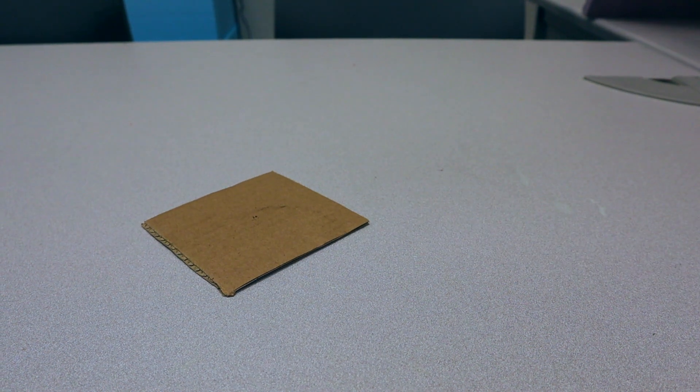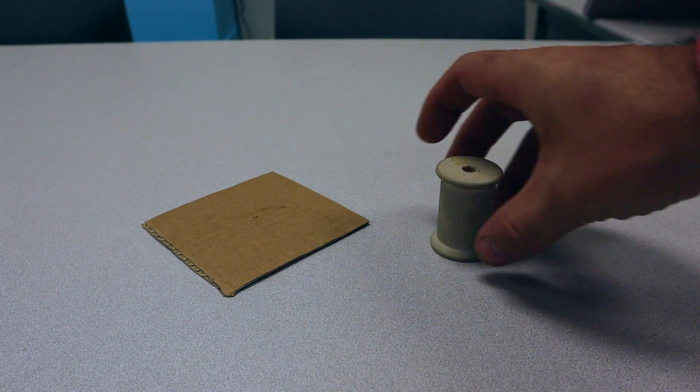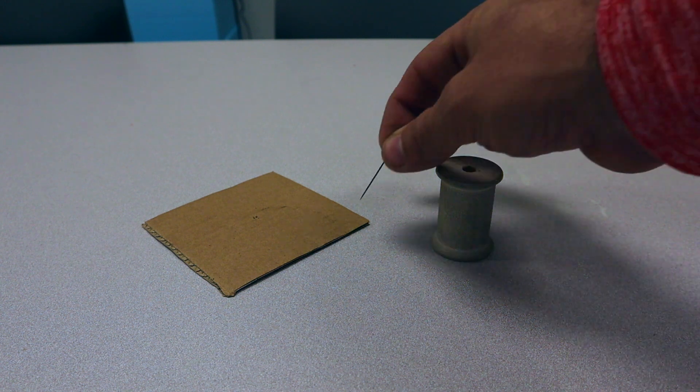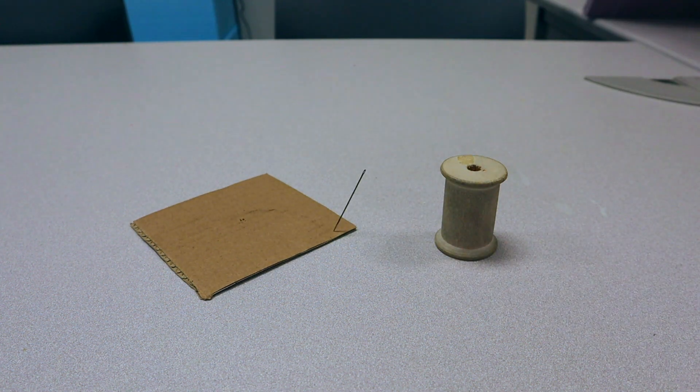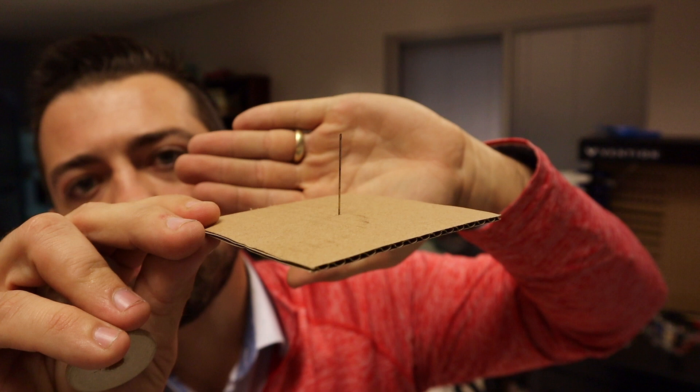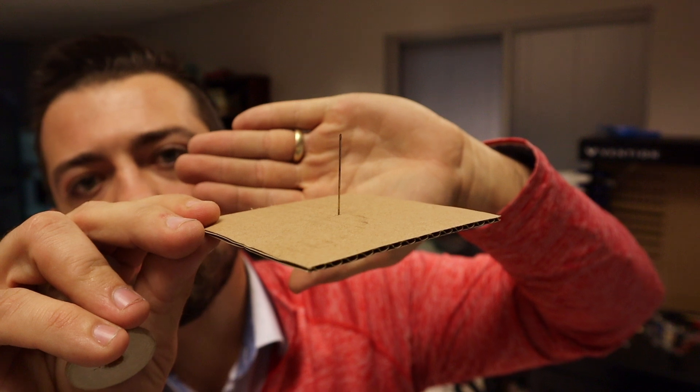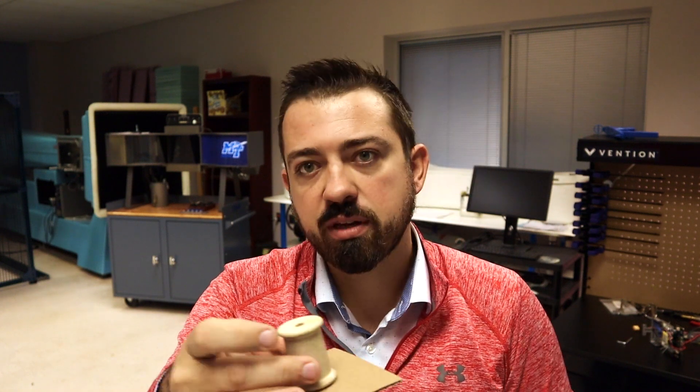This one is pretty easy, and you could get these materials yourself. All I've got here is a 4x4 piece of cardboard, a sewing spool with no string on it, and a sewing needle or push pin. I'm going to insert this needle towards the middle of the cardboard. The needle will give the board some stability so it doesn't just take off and go flying. Then I'll place the spool over top of the needle.